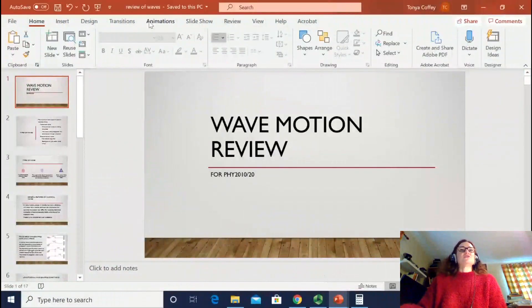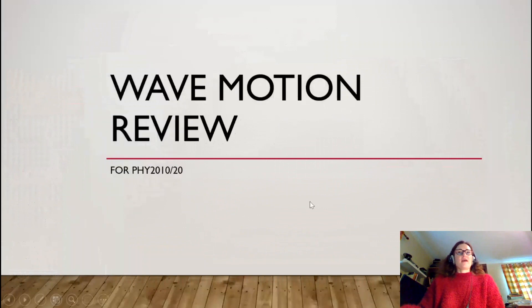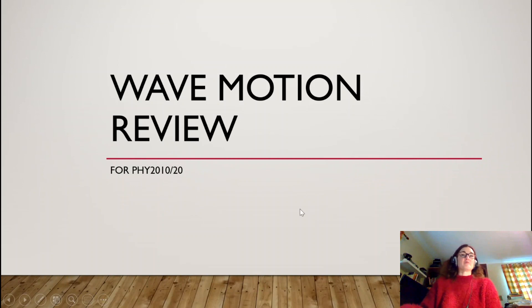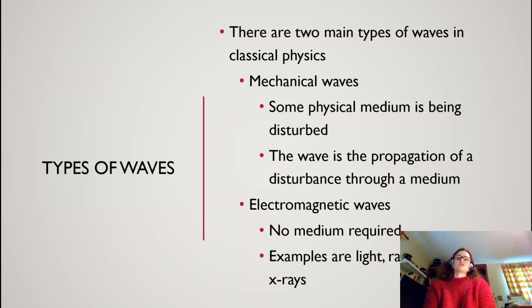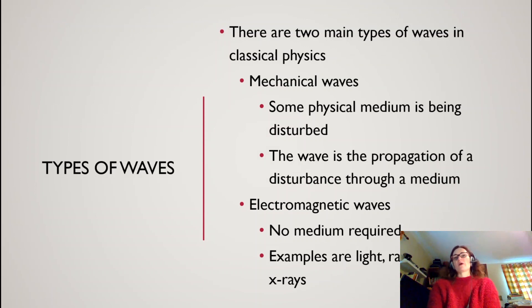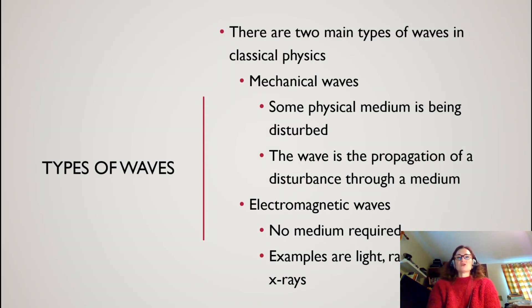Hi there everybody, so today I'd like to do a review of wave motion for those of you that have seen it before — and hopefully most of you have for this course — but if not, welcome to wave motion. There are two main types of waves in classical physics: mechanical waves and electromagnetic waves. In mechanical waves you have a physical medium being disturbed, so some examples might be a wave on a string, ocean waves, sound waves — in all of these cases they need a medium to propagate.